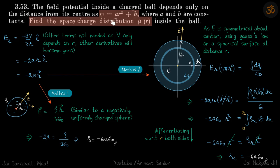We are given a ball inside which the potential is varying as ar² + b, so it's a symmetric distribution. We need to find the charge distribution ρ inside the ball, where ρ is in coulombs per meter cube. Since we are given the potential, the first step is to calculate the electric field, and then with Gauss's law we can find the charge inside as Q_in divided by epsilon.